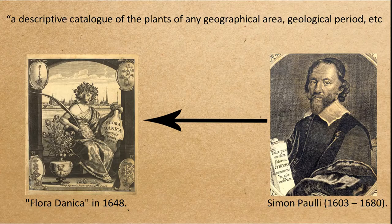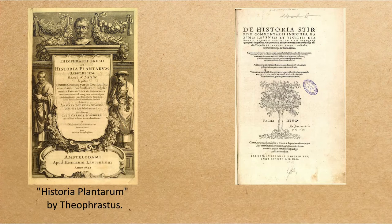Flora gradually replaced more traditional titles such as Historia plantarum or Historia sterpium. In this way, the metonymy and the connection to the Roman goddess fade, where the meanings 'natural vegetation of an area' and 'catalogue of plants' have become much more common.